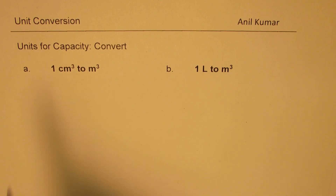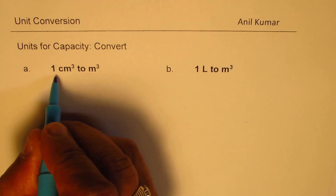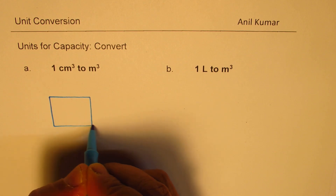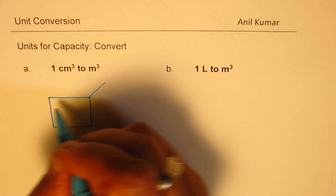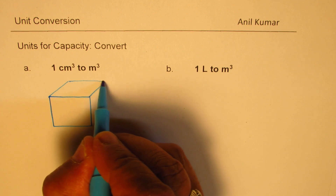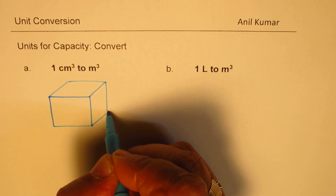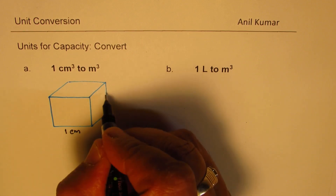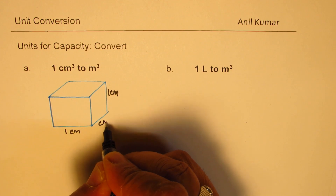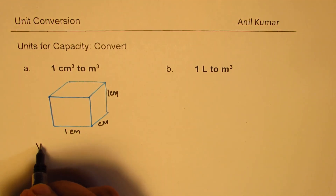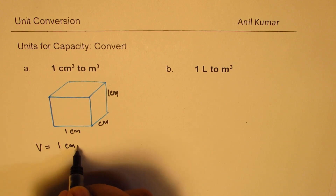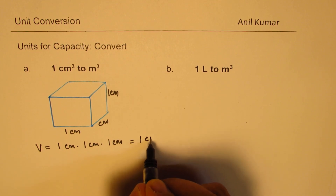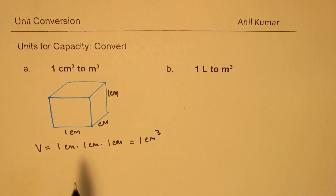Let's begin with one centimeter cube. When I say one centimeter cube, let me make a cube first. Each side of this cube is one centimeter. Therefore, the volume is equal to one centimeter times one centimeter times one centimeter, which is one centimeter cube.